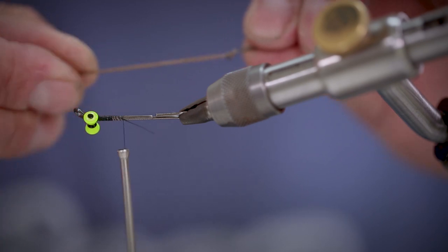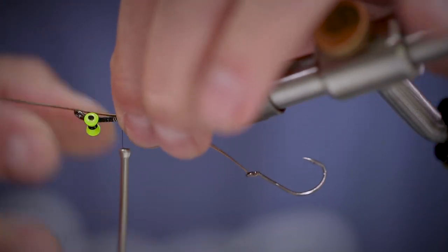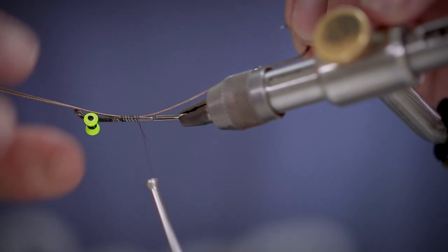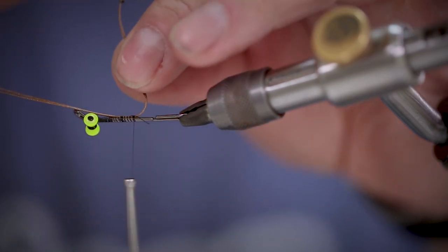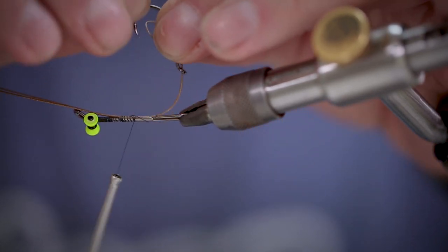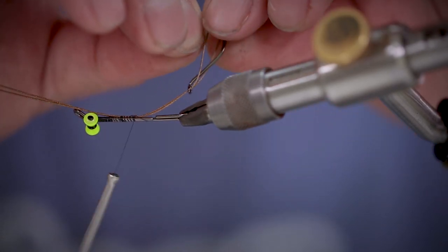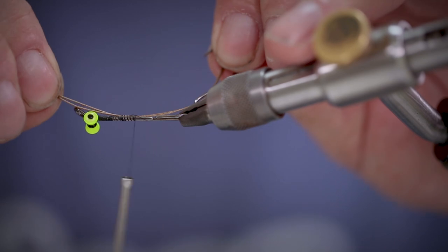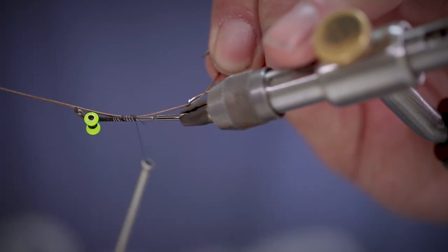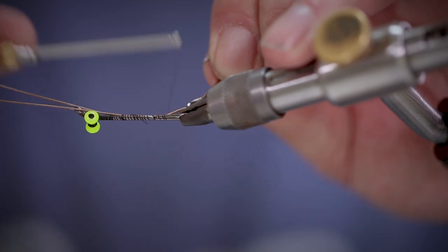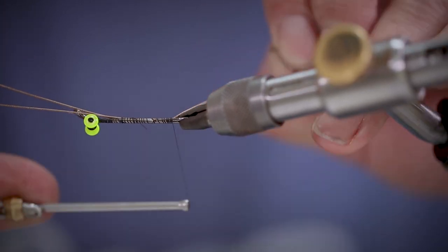Next we're going to tie in our Intruder wire. This one comes pre-rigged with a single stinger hook so that we can measure the length. So we're measuring from the end of the hook up to the bend against the eye of the articulated shank. That's usually about the right length.